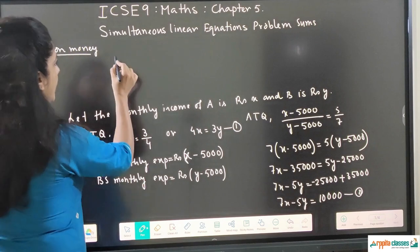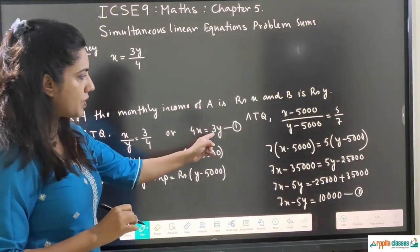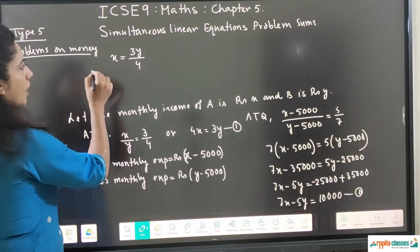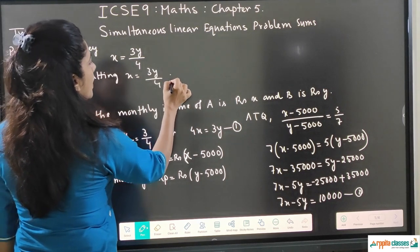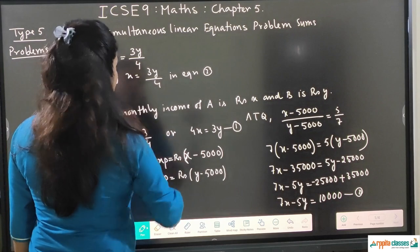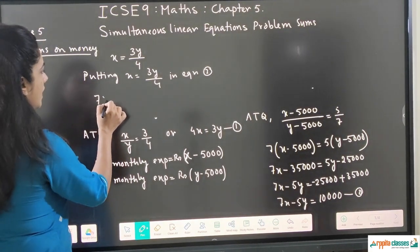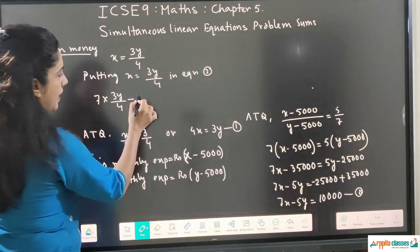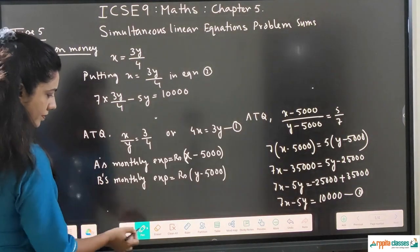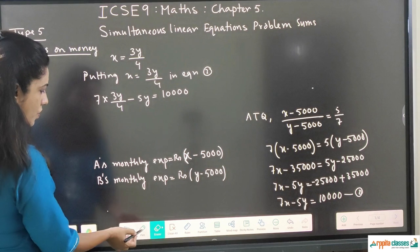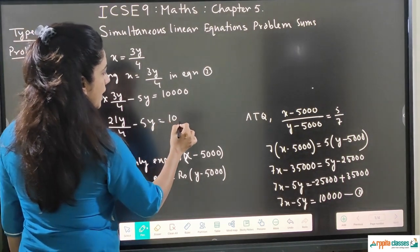From equation 1, X equals 3Y upon 4. Putting X equals 3Y upon 4 into equation 2: 7 into (3Y upon 4) minus 5Y equals 10,000. This gives 21Y upon 4 minus 5Y equals 10,000.